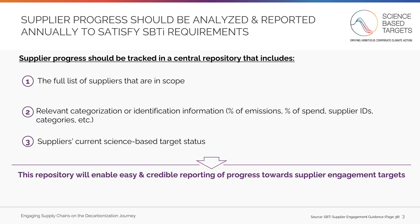To reach your SBTi requirements, you must report progress towards your Scope 3 targets annually. To do this effectively, it is best to create a central repository for tracking all supplier targets and performance that includes: 1. The full list of suppliers that are in scope; 2. Relevant categorization or identification information, such as percentage of emissions, percentage of spend, supplier IDs, and categories; 3. Supplier's current science-based target status. The goal of this repository is to summarize how many suppliers have set science-based targets as a percentage of your total emissions or spend, to ensure credible reporting of progress towards Scope 3 targets.